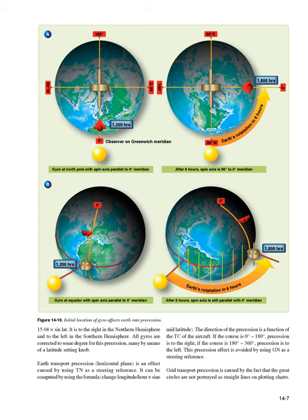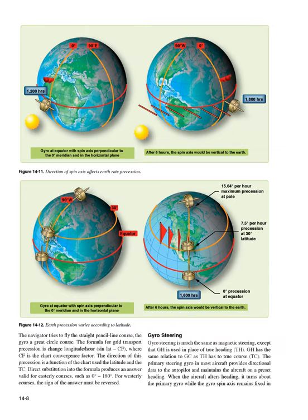Grid transport precession is caused by the fact that great circles are not portrayed as straight lines on plotting charts. The navigator tries to fly the straight pencil line course; the gyro follows a great circle course. The formula for grid transport precession is: change in longitude per hour times sine latitude times CF, where CF is the chart convergence factor. The direction of this precession is a function of the chart used, the latitude, and the TTC. Direct substitution into the formula produces an answer valid for easterly courses (0–180 degrees). For westerly courses, the sign of the answer must be reversed.